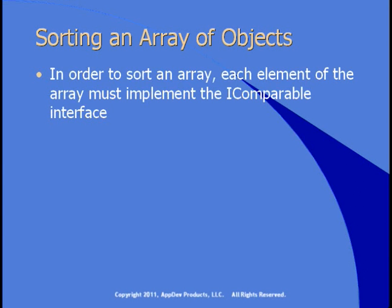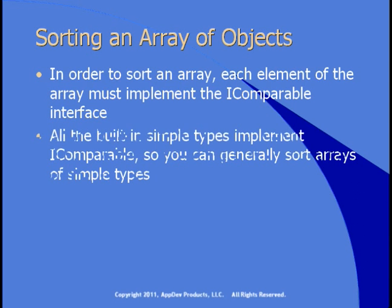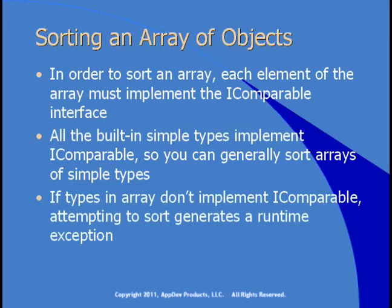In order to sort an array, no matter what kind of array, each element of the array has to implement the IComparable interface. That's how the sort method works — it needs some way to compare one item to another, and unless that item implements IComparable, the array can't be sure it can perform the sort. All the built-in simple types implement IComparable, so you can generally sort arrays of simple types. If types don't implement IComparable, attempting to sort an array will generate a runtime exception.